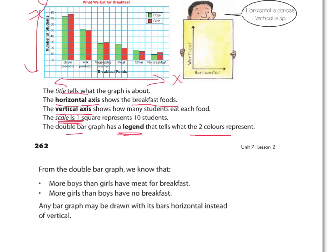So from this double bar graph, we know the following. More boys than girls have meat for breakfast, maybe a bacon or a ham or something. More girls than boys have no breakfast. So the no breakfast bar is higher. We could also see that more boys have grains for breakfast. More girls have milk for breakfast, and so on. And we could even clarify and say, okay, about this many more. So it looks like about five more perhaps.